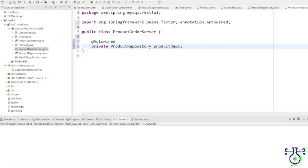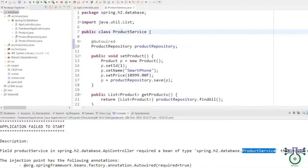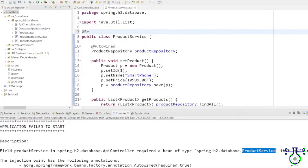The @Autowired annotation is used for automatic injection of beans. The @Qualifier annotation is used in conjunction with @Autowired to avoid confusion when we have two or more beans configured for the same type. At the end, we annotate the class with the @Service annotation. The @Service annotation tells the Spring container to scan the classpath for classes annotated with this annotation and create beans for them.